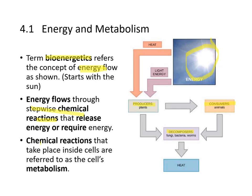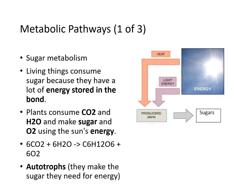The chemical reactions that take place inside the cell are referred to as the cell's metabolism. When it comes to sugar metabolism, living things consume sugar because it has a lot of energy stored in the bonds. Plants consume CO2 and H2O to make sugar and oxygen using the Sun's energy — that's photosynthesis. It requires six carbon molecules and six water molecules to produce one glucose molecule and six oxygens.